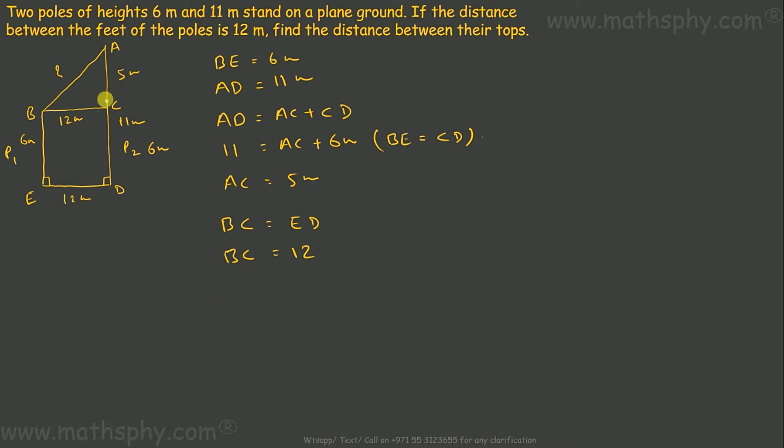I'll write: triangle ACB is a right angle triangle, 90 degrees at point C. In that case,